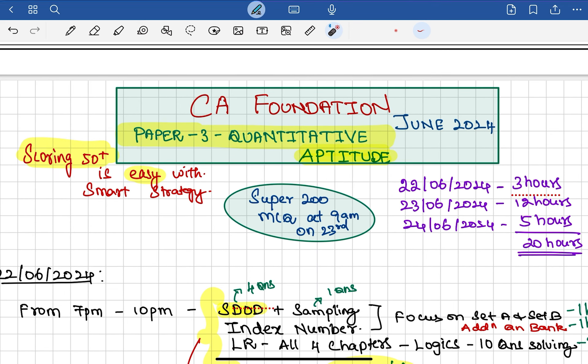I will guarantee you scoring 50 marks is easy with our smart strategy. There is an effective hours of learning of 20 hours total. Today is the law exam day, which I hope you did well. On 23rd and 24th, we have five hours in the morning session. I will come up with Super 200 MCQs on 23rd at 9 AM available on our YouTube channel. The PDF will be uploaded in Google Drive, or you can WhatsApp me at 9043971982.